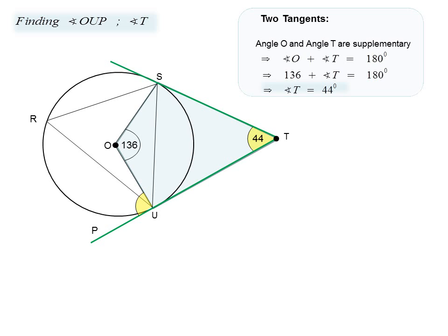Therefore angle O and angle T add to 180 degrees, giving angle T equal to 44 degrees.